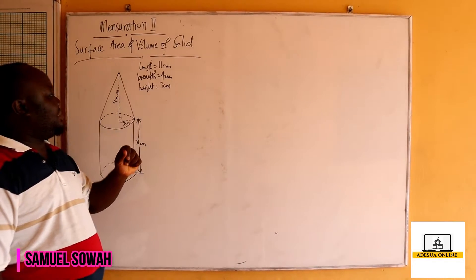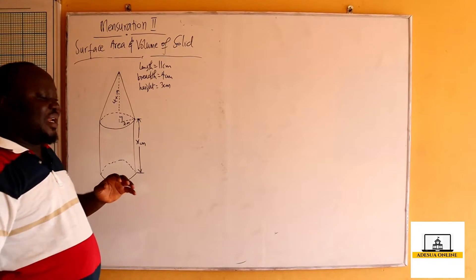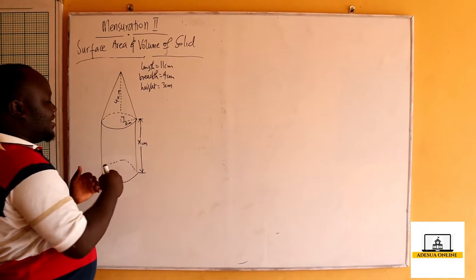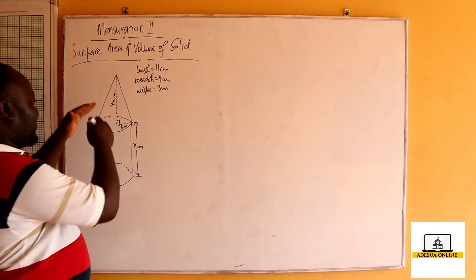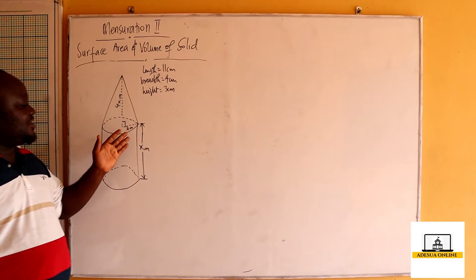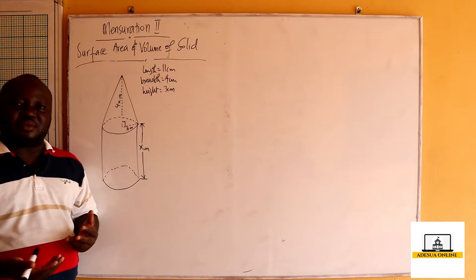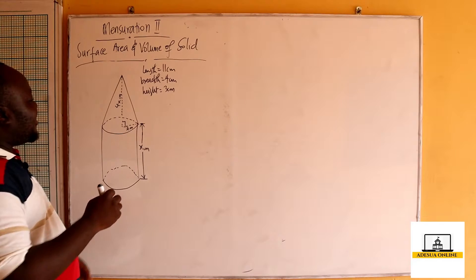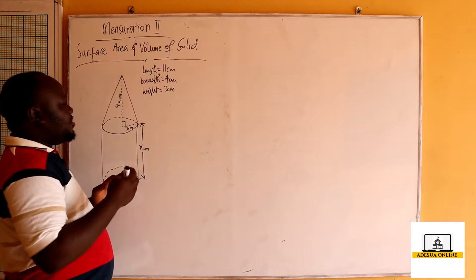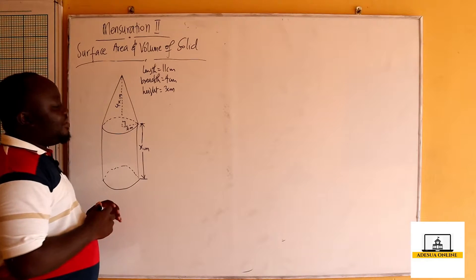A solid metal cuboid of length 11 centimeters, breadth 4 centimeters, and height 3 centimeters was melted to form another solid consisting of a cone and a cylinder joined together. The height of the cone is four times the height of the cylinder. Assuming no material was lost, the volume of the cuboid when melted was used to form the cone and cylinder joined together.